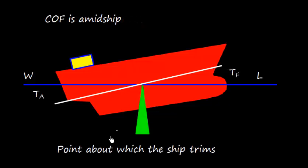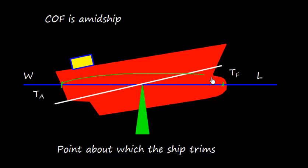Let us also consider that the center of floatation is at midship. The center of floatation is the point about which the ship trims. This is the geometrical center of the waterplane area. If the ship is floating like this, this is the waterplane area, and the geometrical center of this waterplane area is the center of floatation.